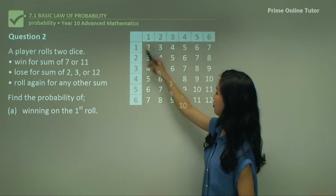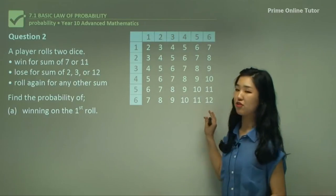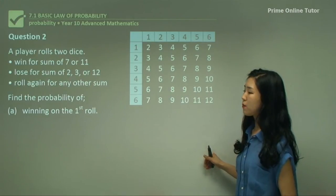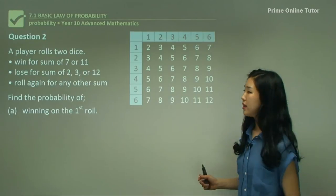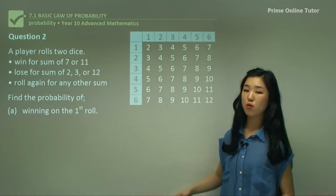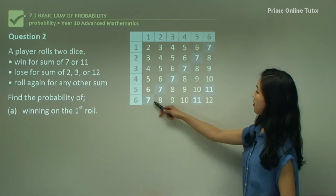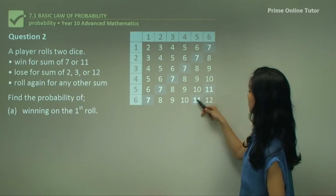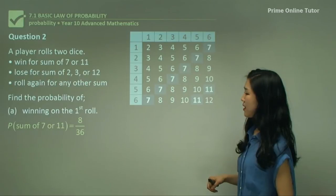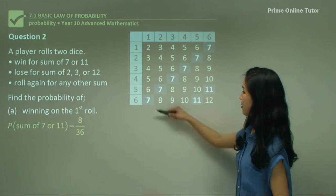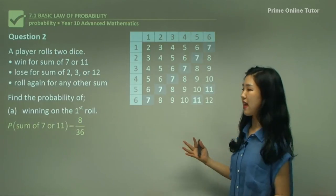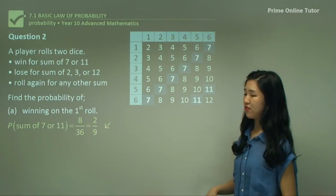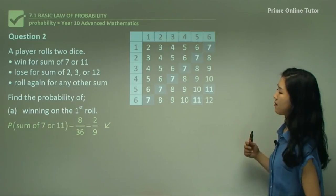I've added all the columns together — so 2 plus 2 makes 4, 3 plus 5 makes 8, etc. Part A says: what's the probability of winning on the first roll? If I want to win, the sum must be 7 or 11. See how these ones here and these two make a sum of 7 or 11 — that's 1, 2, 3, 4, 5, 6, 7, 8. So it's simply going to be 8 out of the total of 36, because 6 times 6 is 36. Only 8 outcomes make the person win. Simplify it to get 2 over 9.